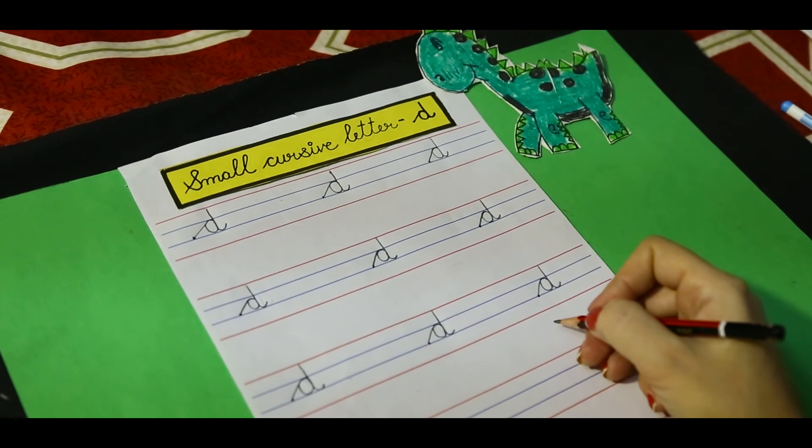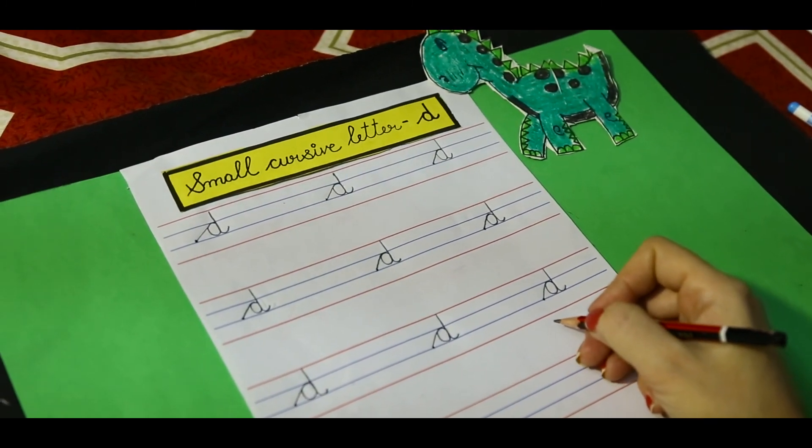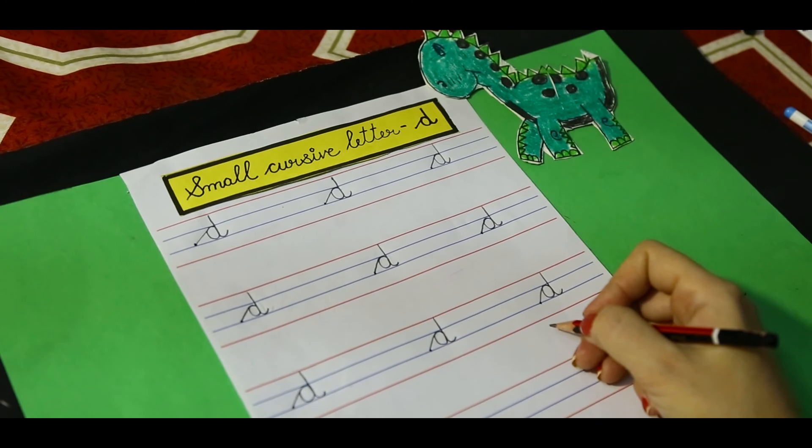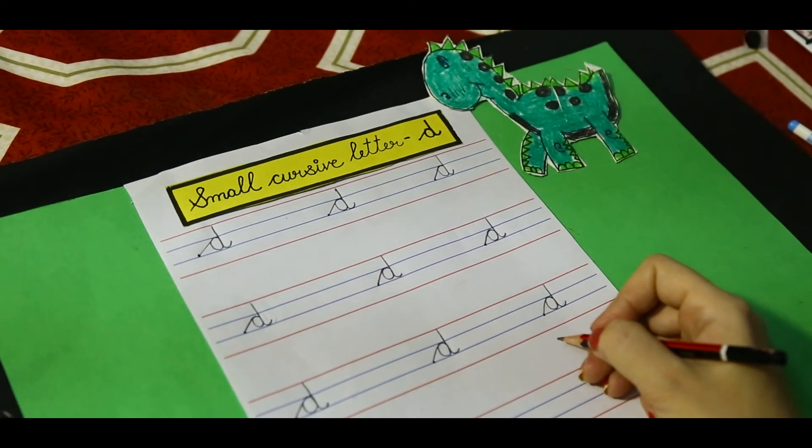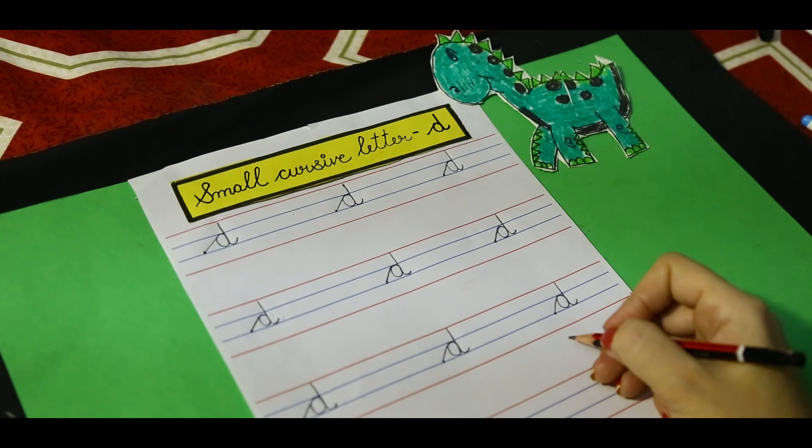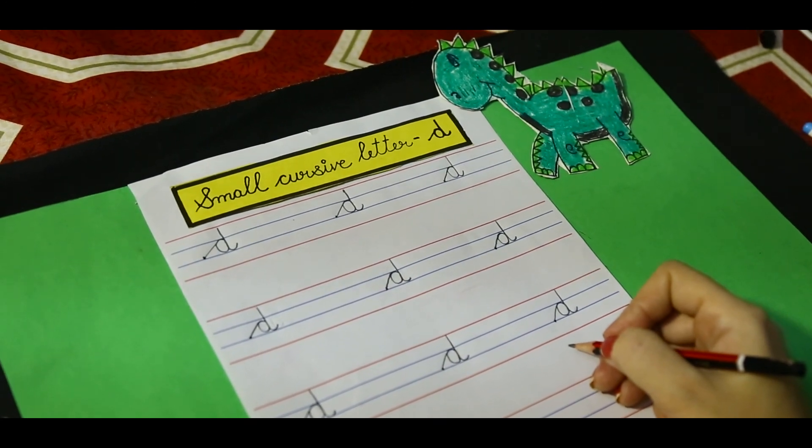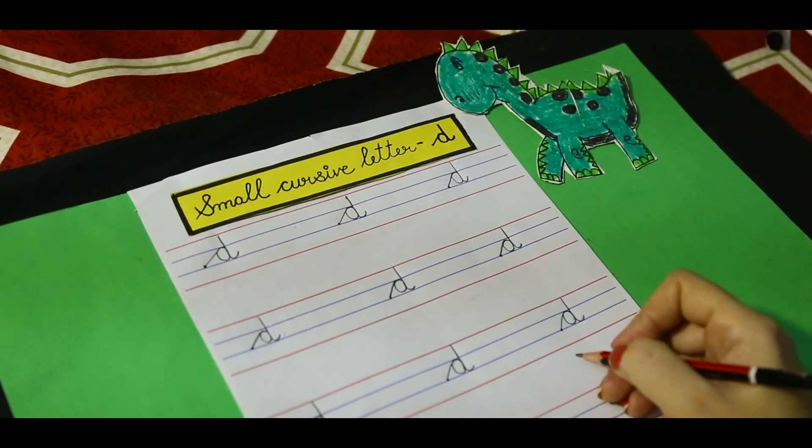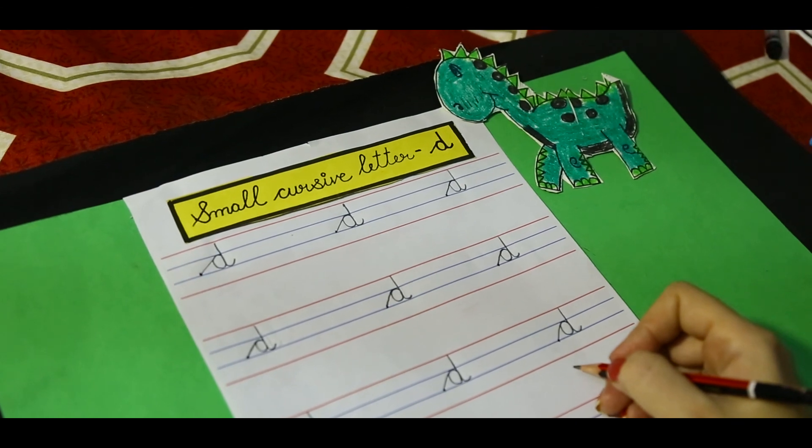I hope you understood very well how to make small cursive D. Now, it's your turn to make small cursive D properly following the correct formation. Bye-bye!